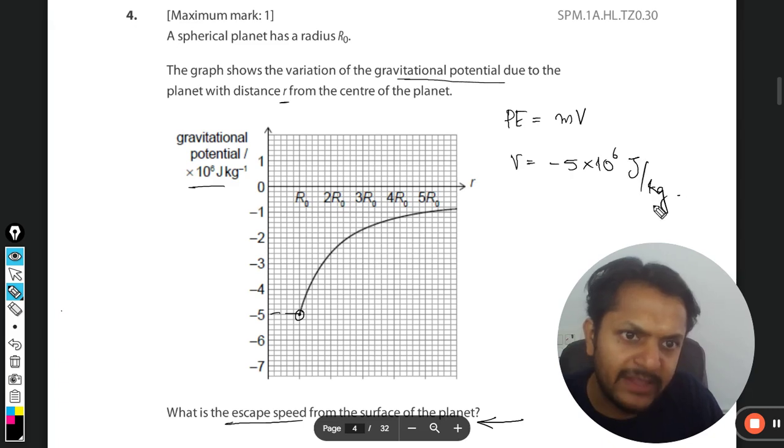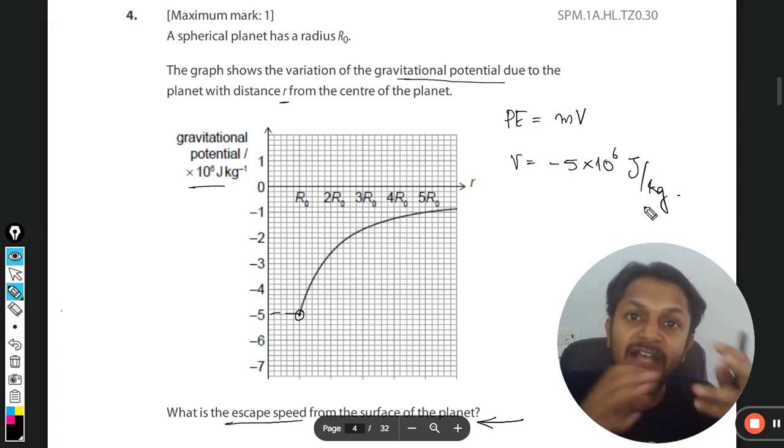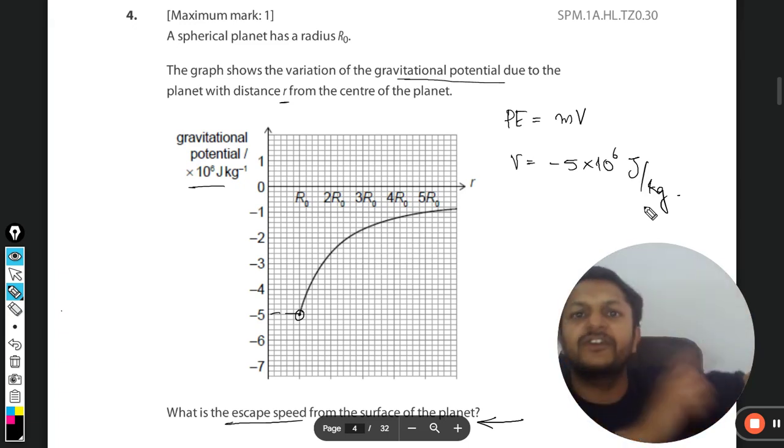What do you mean by that? For 1 kg mass, 5 × 10^6 joule of energy has to be given to the body which is 1 kg in mass. This much energy has to be given to the body so that the total energy becomes zero and the body goes to infinite distance.